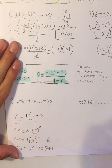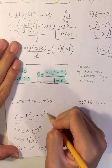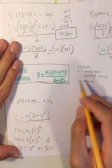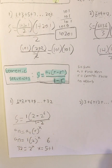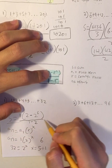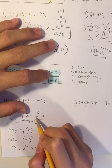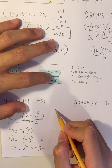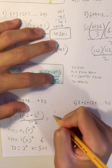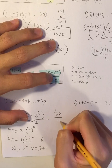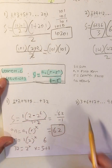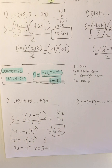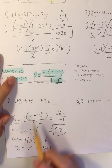So going back to the equation: 1 times 2 minus 2 to the 6, over 1 minus 2 because that's the ratio. Let's simplify: 2 to the 6 is 64, so 2 minus 64 is negative 62. Negative 62 over negative 1 simplifies to 62. So the sum of all the terms in this geometric sequence is 62. You can check your work by adding them up.